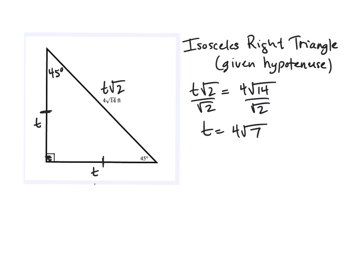So now that I know that each leg here is 4 root 7, the area of our triangle is 1 half base times height, 1 half 4 root 7 times 4 root 7.